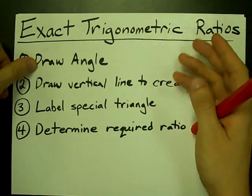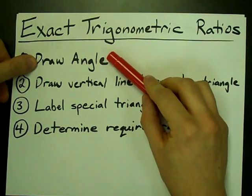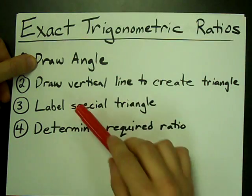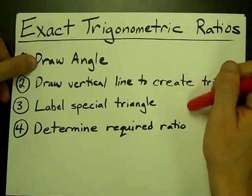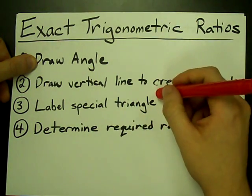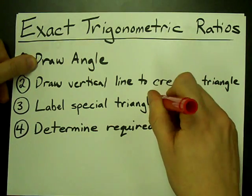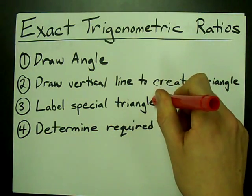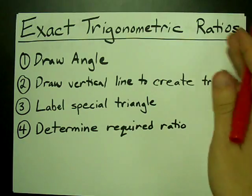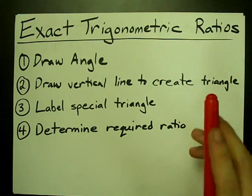I like to use a four-step process where the first thing you do is draw your angle on a grid, you draw a vertical line to create the triangle, you label it as one of the special triangles, and then you determine the required ratio from that, and I'll show you what I mean.